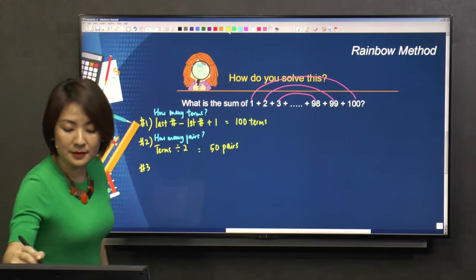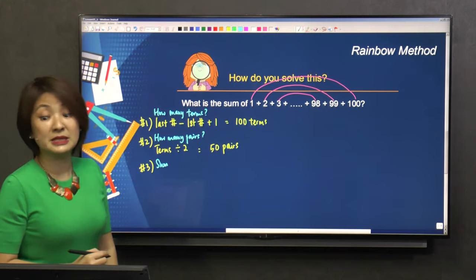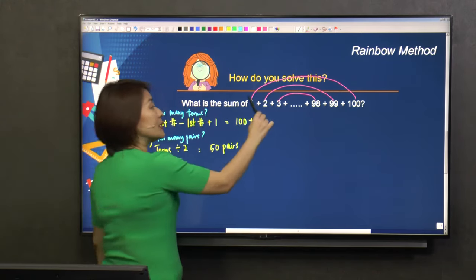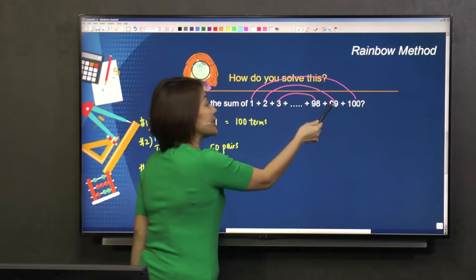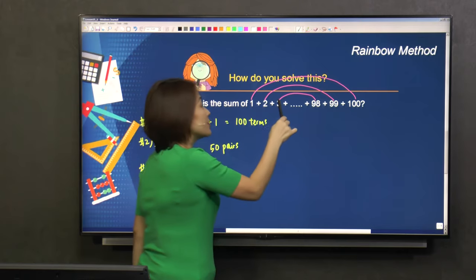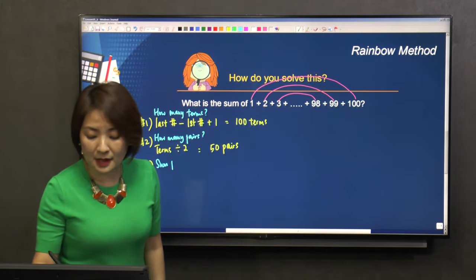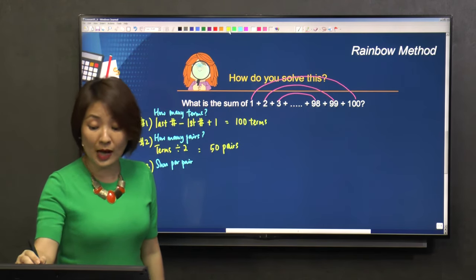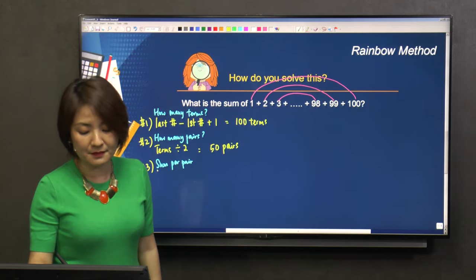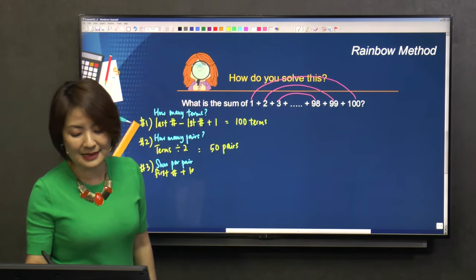It's actually sum. What is sum? Sum means you add. What did we do? We added 1 to 100. What did we get? 101. 2 + 99: 101. 3 + 98: 101. So sum per pair—every pair has the same sum. How do I get sum per pair? I'll take the first number plus the last number.